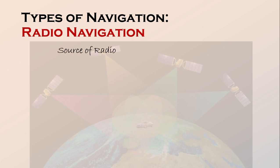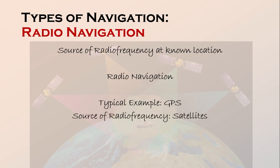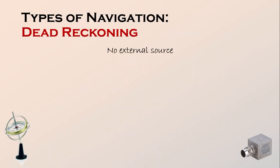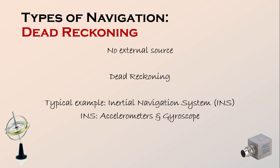When we use a source of radio frequency at a known location for navigation, then this is radio navigation. A typical example of radio navigation is GPS — Global Positioning System — where the sources of radio frequency are satellites whose positions in their orbits are known. When we use no external source for navigation, then this particular type is called dead reckoning. A typical example of dead reckoning is an Inertial Navigation System, or INS, in which accelerometers and gyroscopes are mounted on the body which is to be navigated.